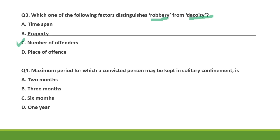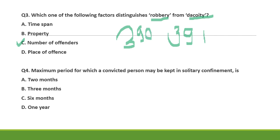You can refer Section 391 for dacoity and Section 390 for robbery. Look at the definitions of both and see the distinction — it is direct: by the number of offenders you can distinguish robbery and dacoity.